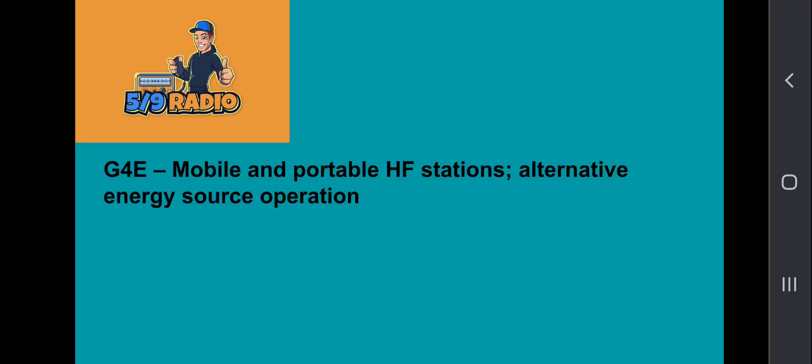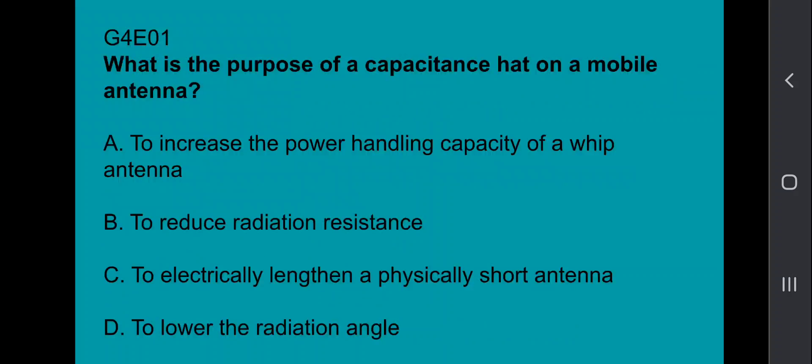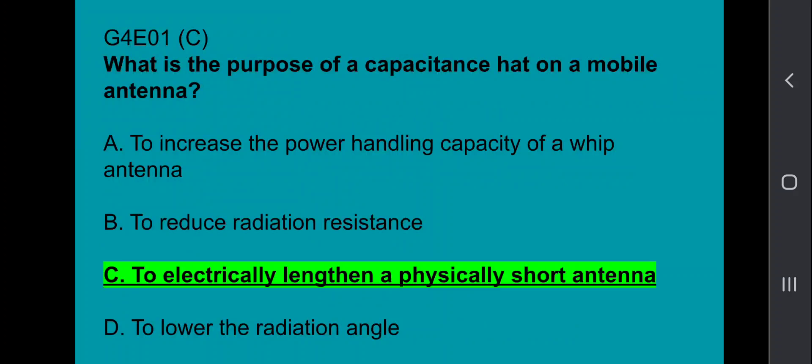G4E covering mobile and portable HF stations, alternative energy source operations. G4E01, what is the purpose of a capacitance hat on a mobile antenna? And that's to electrically lengthen a physically short antenna.